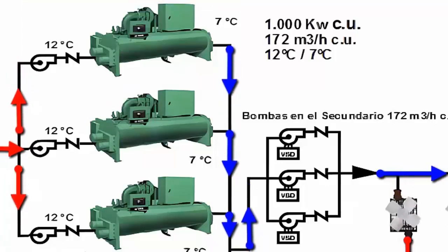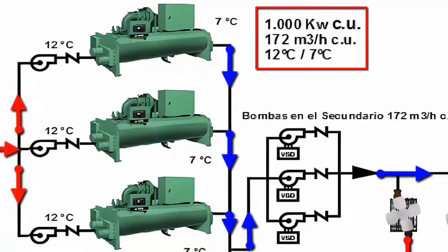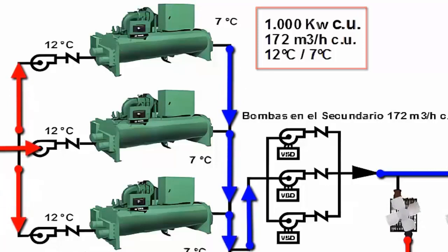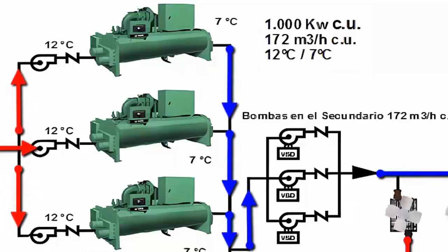Installation data indicates that each chiller has a power of 1000 kW, and a flow rate of 172 m³ per hour.